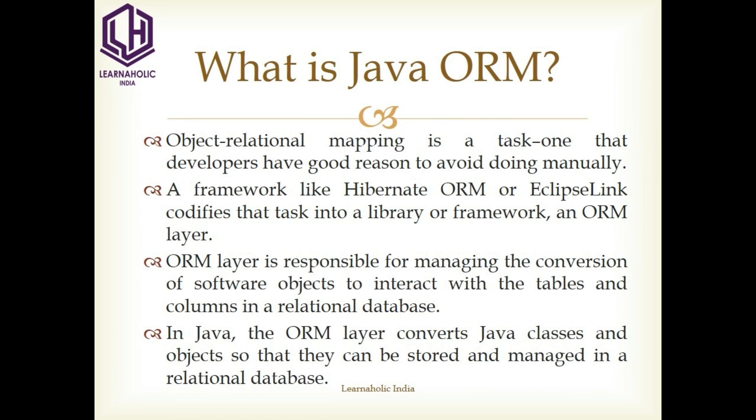Now let's see what is Java ORM. Object Relational Mapping is a task that developers have good reason to avoid doing manually. A framework like Hibernate ORM or EclipseLink codifies that task into a library or framework — that is, an ORM layer. The ORM layer is responsible for managing the conversion of software objects to interact with the tables and columns in a relational database. In Java, the ORM layer converts data classes and objects so that they can be stored and managed in a relational database.